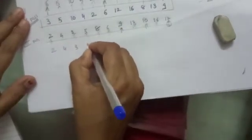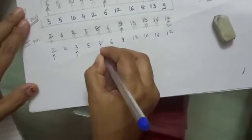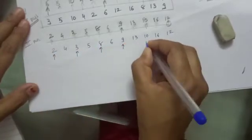So this is the outcome of pass 2: 2, 4, 3, 5, 8, 6, 9, 13, 10, 16 and 12. And if you see with the gap of 2, all elements are sorted.